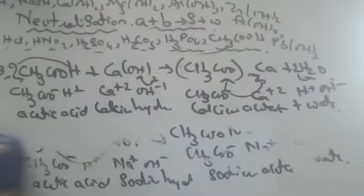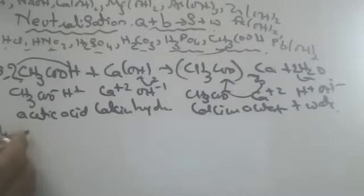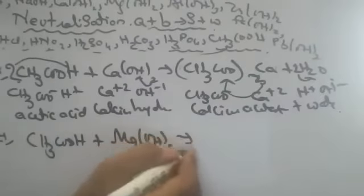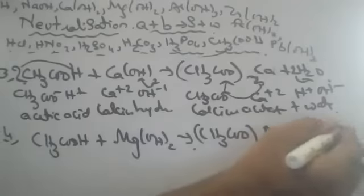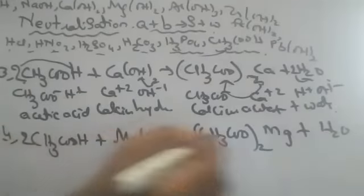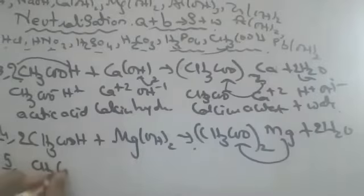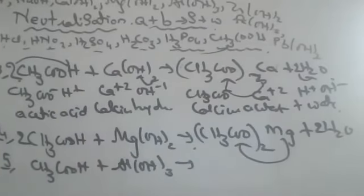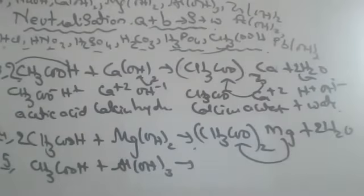Writing reactions is very important. If you are perfect now, chemistry will become easy in the future. Next: CH₃COOH plus magnesium hydroxide gives magnesium acetate — (CH₃COO)₂Mg plus H₂O. Since magnesium is plus two, two acetate ions are needed, and two hydrogens balance on each side. Next: acetic acid with aluminium hydroxide — can anyone tell me the formula of aluminium acetate?